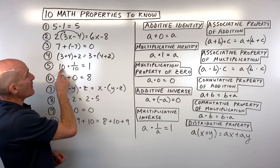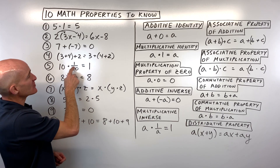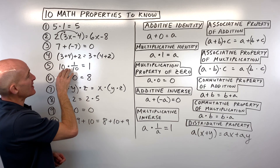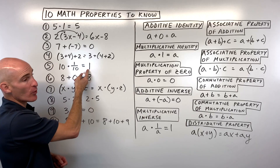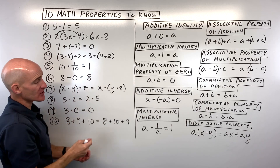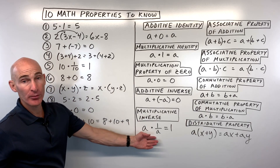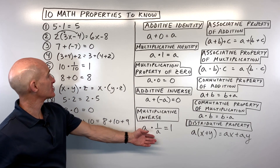Number five: 10 times one-tenth equals one. Ten times its reciprocal equals one — that's called the multiplicative inverse.